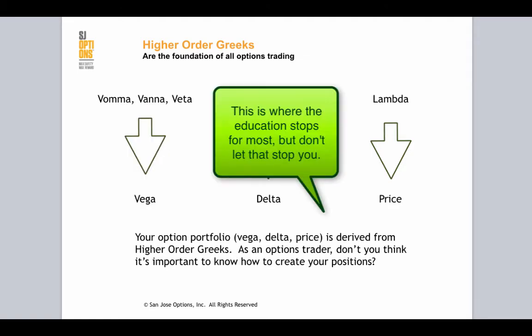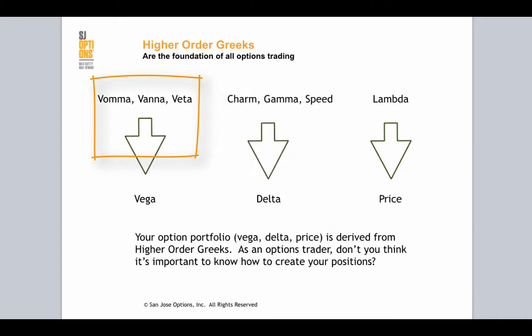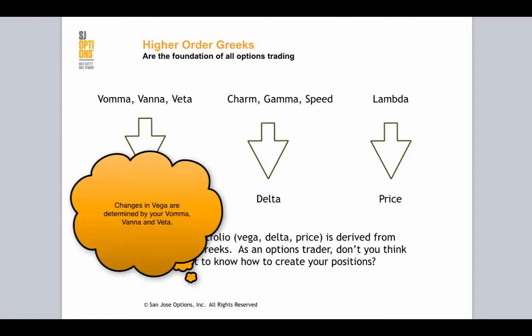This is where the education stops for most traders. The Vama position, and your Vana position — if you look above the Vega — and your Veda position: these are option Greeks which are the higher order Greeks that filter down and actually produce the output of the Vega.